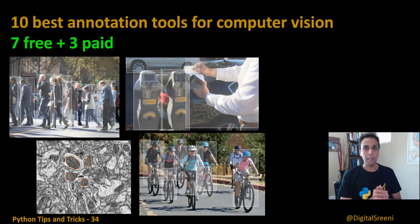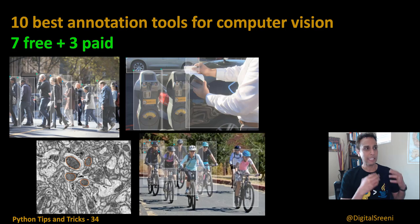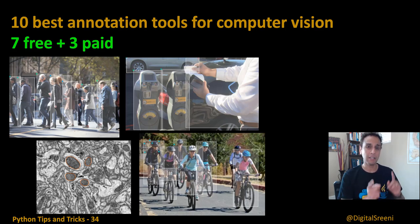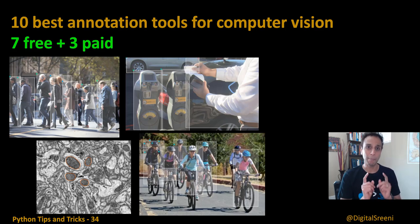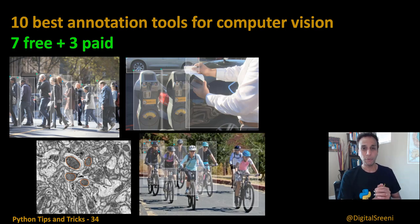Here I'm going to talk about 10 annotation tools for computer vision, especially with a focus on object detection. In the past, I recorded a video on annotation tools for semantic image segmentation, so here I'm going to focus on object detection.